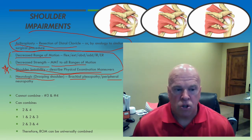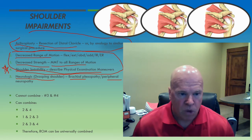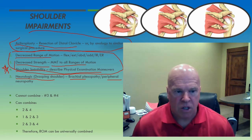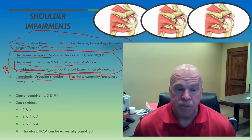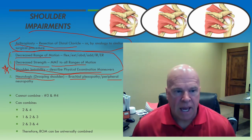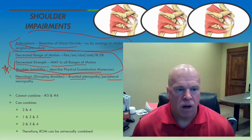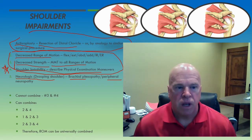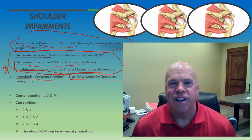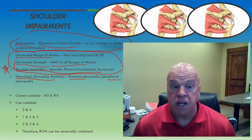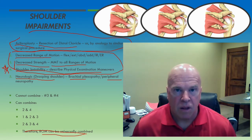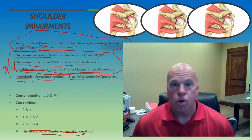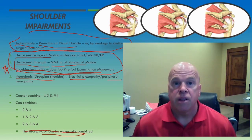With regards to combining these impairments: we cannot combine decreased strength with decreased stability of the shoulder. But we can combine decreased range of motion with shoulder instability. We can combine decreased range of motion with decreased strength and decreased stability. We can combine arthroplasty with decreased range of motion and decreased strength. We can also combine decreased range of motion with decreased strength and loss of shoulder stability. Therefore, loss of range of motion can be universally combined with all of the other impairments.